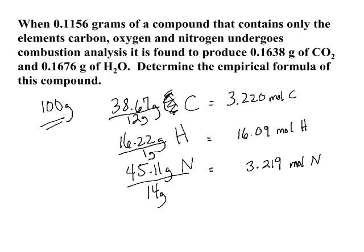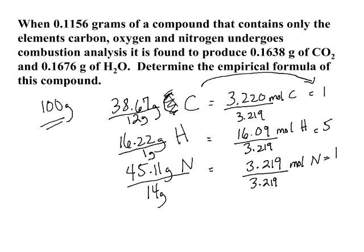At this point you go through and divide by the smallest value. So just like any empirical formula, dividing each by 3.219 gives you a 1 to 5 to 1 ratio. That's 1 carbon, 5 hydrogens, and 1 nitrogen. So the empirical formula of your unknown compound using combustion analysis is CH5N.